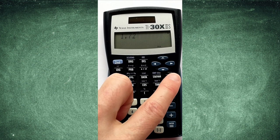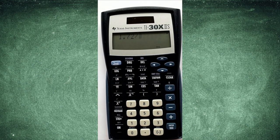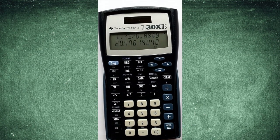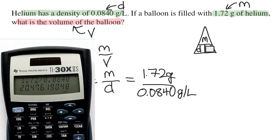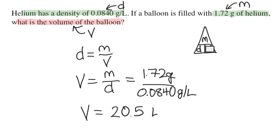Now, I'll type it into my calculator. 1.72 divided by 0.0840. I'm going to round my answer to three digits since both my given values have three significant digits. And so the answer is 20.5 liters. Cheers.